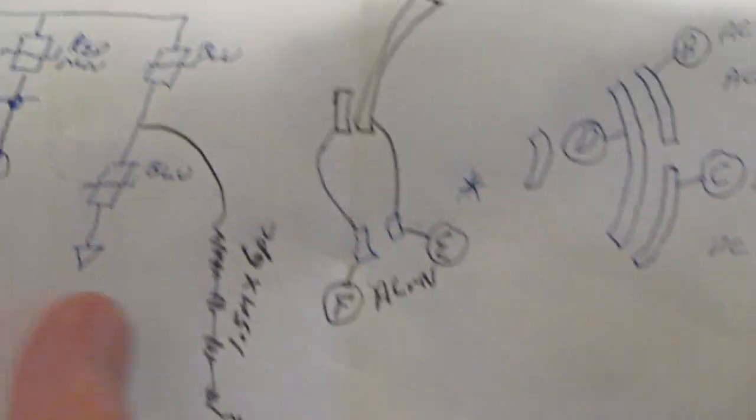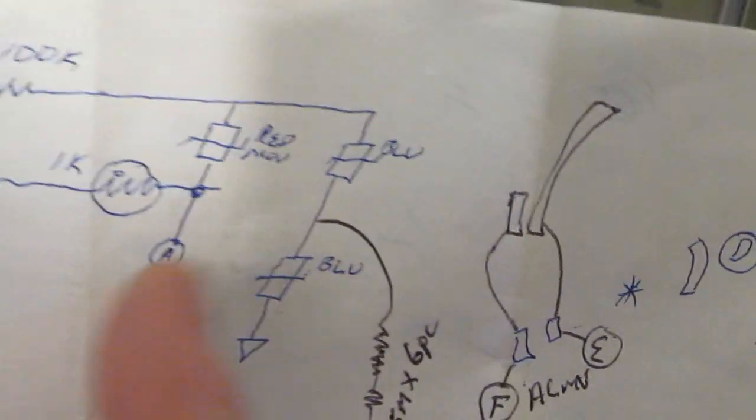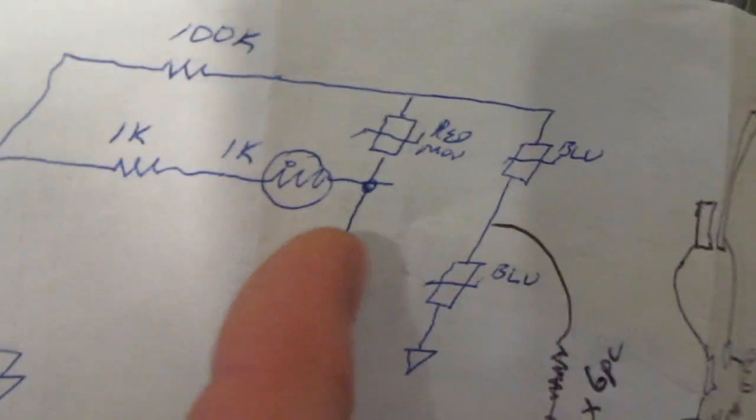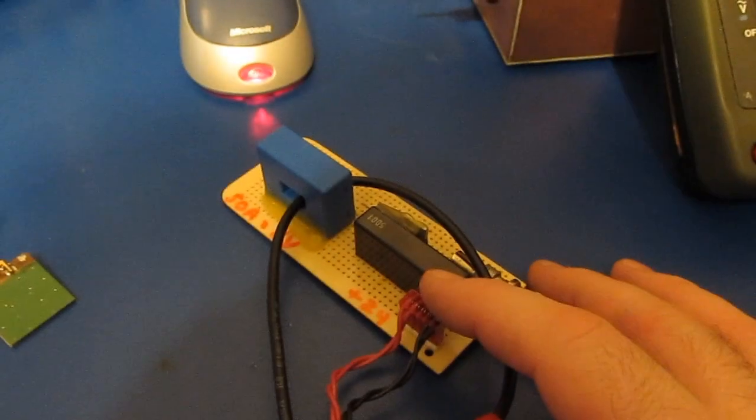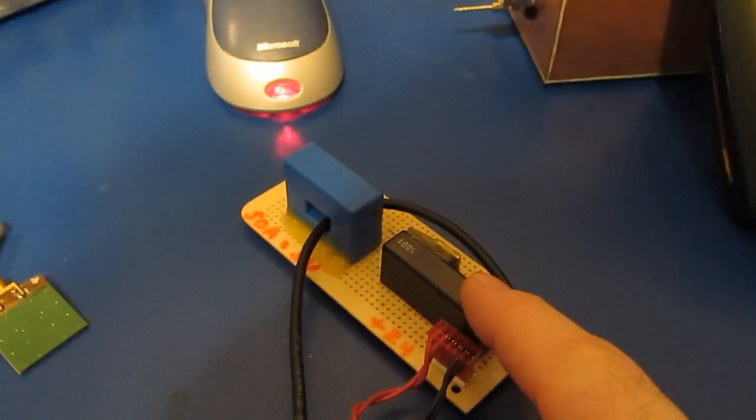However, again, these are in parallel with these two capacitors. Of course we also have the capacitance of the MOV sitting right across the output. All that could come into play when we start looking at a high frequency transient.